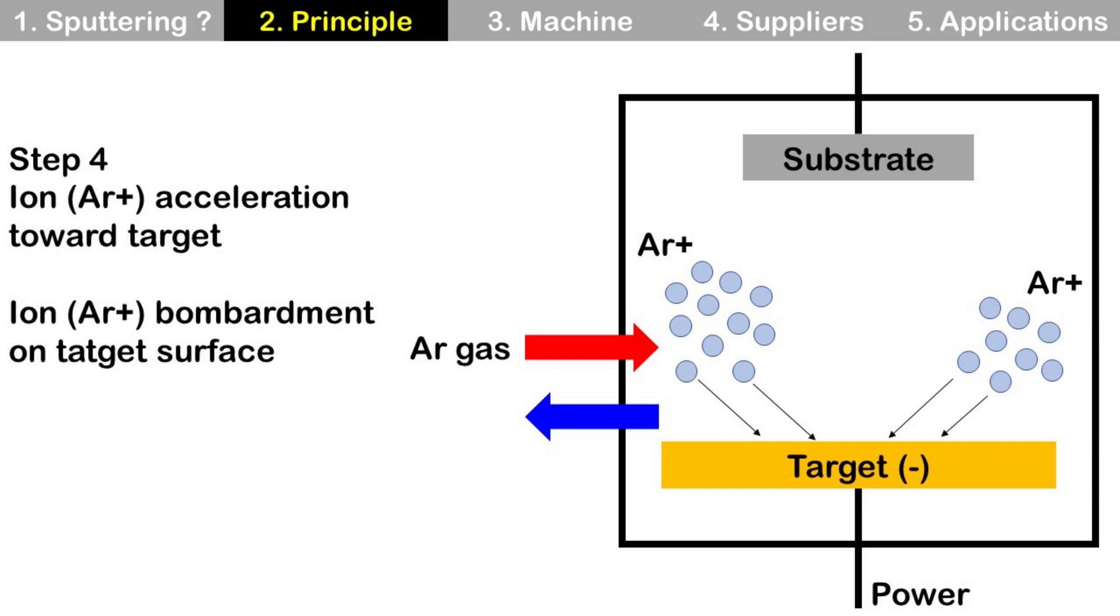Step 4: Ion acceleration toward target and ion bombardment on target surface. The target is biased negatively, so positive argon ions are accelerated by the electric field, then hit the target.